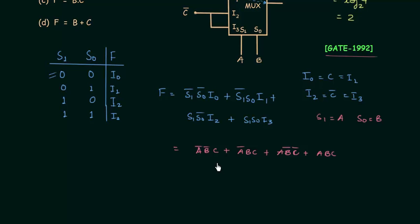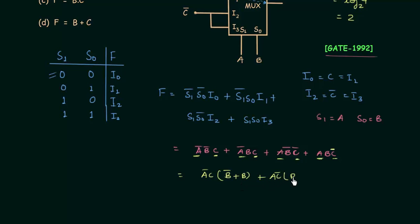Now we will minimize it using Boolean algebra. From the first two terms, a complement · c is common; from the last two terms, a · c complement is common. So we have a'c(b' + b) + ac'(b' + b). Since b' + b equals 1, we get a'c + ac', which is the expression for the XOR operation. So a XOR c is the answer.